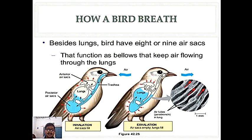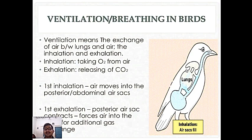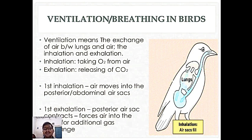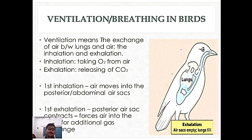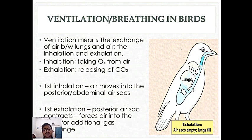Bird actually uses two rounds of inhalation and exhalation to move a volume of air through its respiratory surface. First inhalation: air moves into the posterior abdominal air sacs. Pehli breath mein — air nostrils se trachea ke through posterior air sacs mein jati hai. Air comes from nostrils, through trachea, into the posterior air sacs.